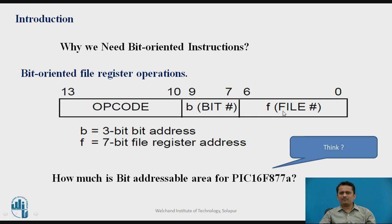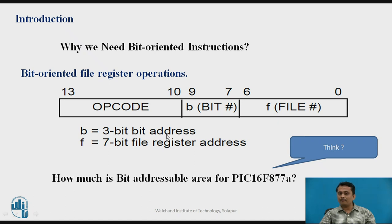The format of a bit-oriented instruction is 14 bits wide. Bits 10 to 13 form the opcode and decide which bit-oriented instruction it is. A 3-bit field 'b' specifies the bit address within the file register, since the file register is 8 bits wide. The remaining 7 bits represent the file register address of a particular bank.